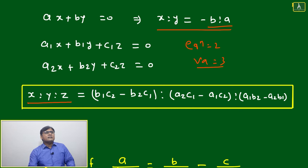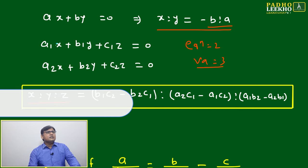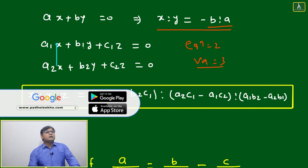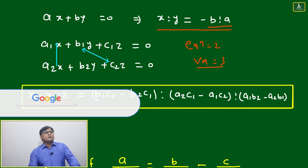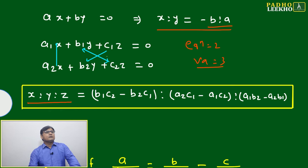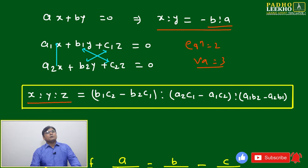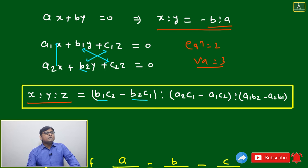If you want to get x, what we will do is just leave it and cross multiply: cross multiply this one, cross multiply this one, again cross multiply this one. It's very simple: b₁c₂ minus b₂c₁.